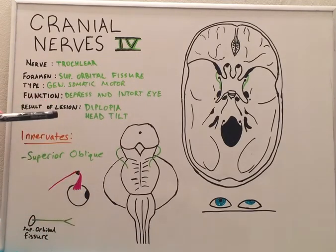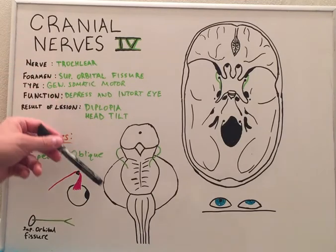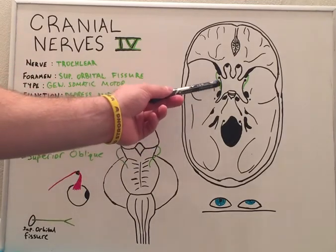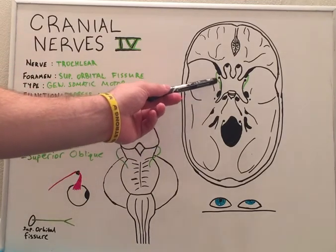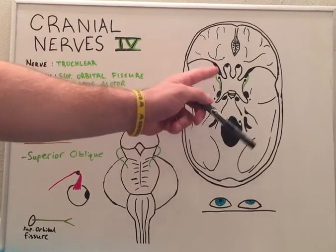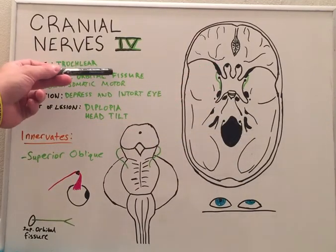The trochlear nerve moves along the lateral wall of the cavernous sinus and continues anteriorly through the superior orbital fissure.